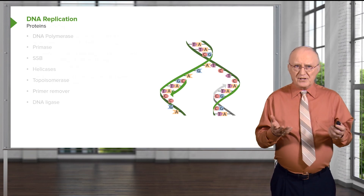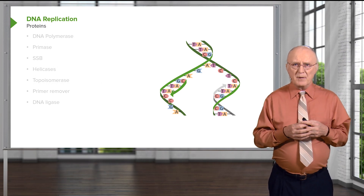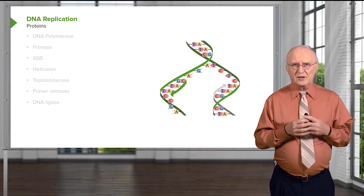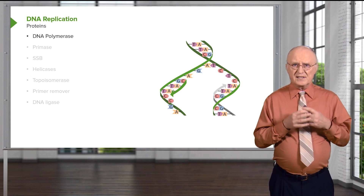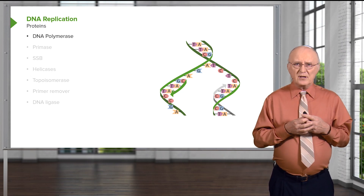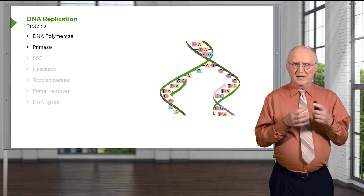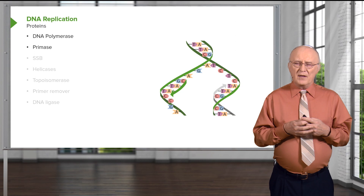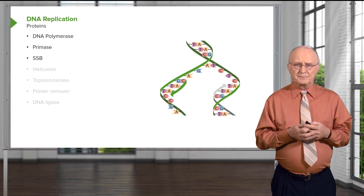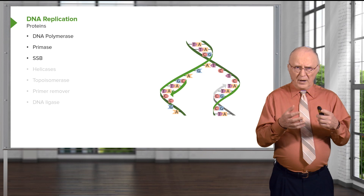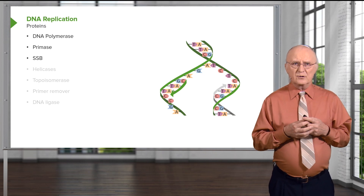There are several proteins involved in the replication of DNA. First, there's a DNA polymerase that actually makes the phosphodiester bonds to join everything. There's a primase, a protein that helps to start the synthesis of the DNA. And there's the single-stranded binding protein, which, as its name suggests, binds to single strands.